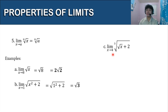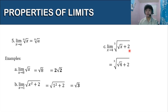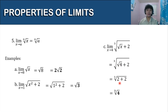For letter c, we're going to find the limit of the cube root of the quantity square root of x plus 2 as x approaches 4. By substitution we have the cube root of the square root of 4 plus 2. The square root of 4 is equal to 2, so we have the cube root of 4 as our limit.